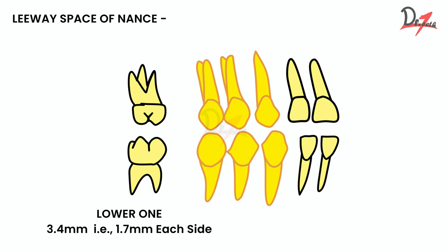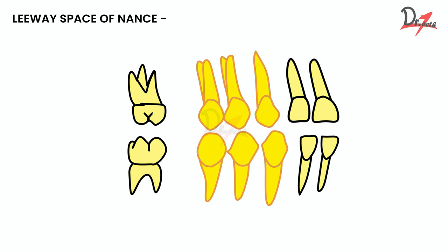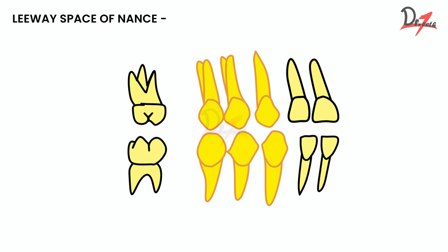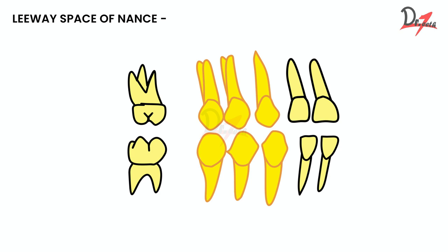The significance of the leeway space of Nance is that this space is utilized by the molar to drift mesially. This mesial drift helps establish the Class 1 molar relationship. Hence, the mandibular molar utilizes this space to move mesially and establish the Class 1 molar relationship.